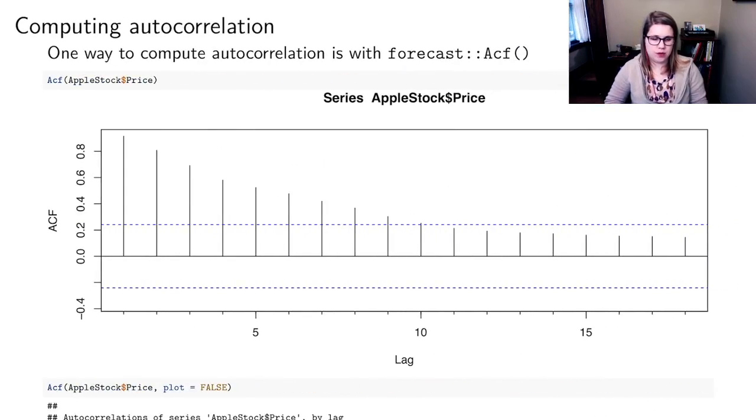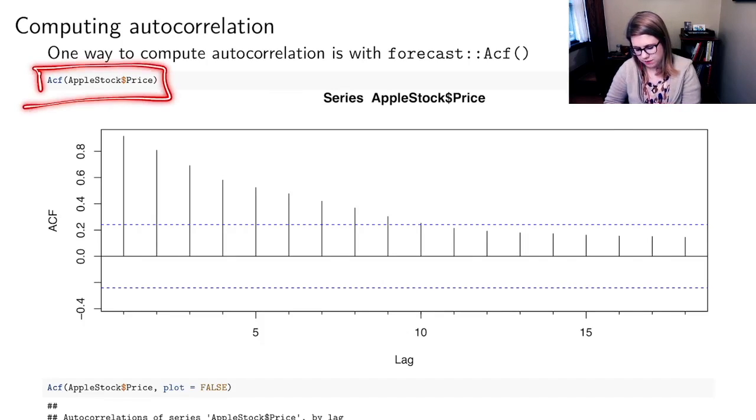One way to compute the autocorrelation is to use the function ACF. This comes from the forecast package, so you need to library forecast in order to use it. If you just run ACF on a whole data set, you will get a time series plot for every single variable. I'm using the base R format where I do the name of the data set, then a dollar sign, then the name of the variable. This will make an ACF plot of that price variable.